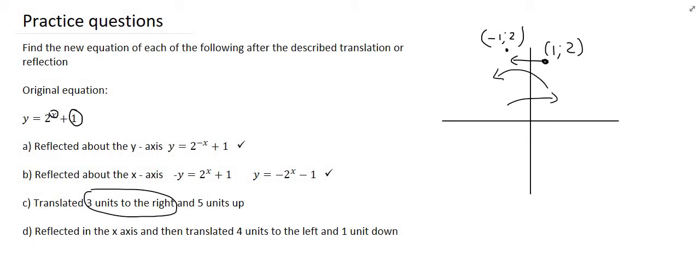Remember when you're moving left and right it's actually opposite to what you would think. So three units to the right we're going to have to say minus three to show that you're moving to the right, and so the new equation for that is going to be as follows. And then what we can do is just simplify the one plus five as six and there we have the new equation for number one C.